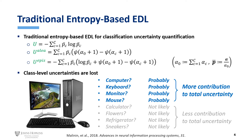With the prior distribution, we can derive the evidential uncertainties of any given input data. The traditional method quantifies total uncertainty as the predictive entropy, and decomposes it into aleatoric and epistemic components based on an information theory approach. However, this method can only derive the overall uncertainty associated with the sample, namely how uncertain a given sample is.